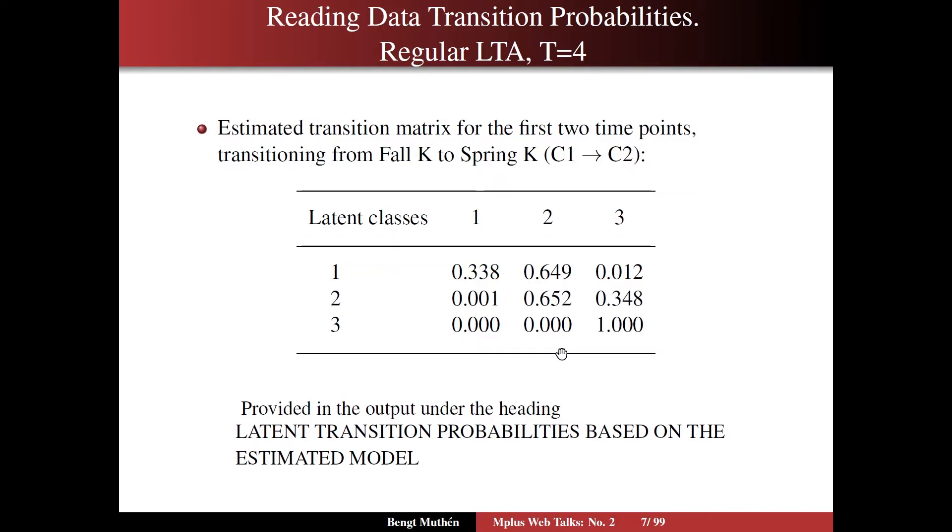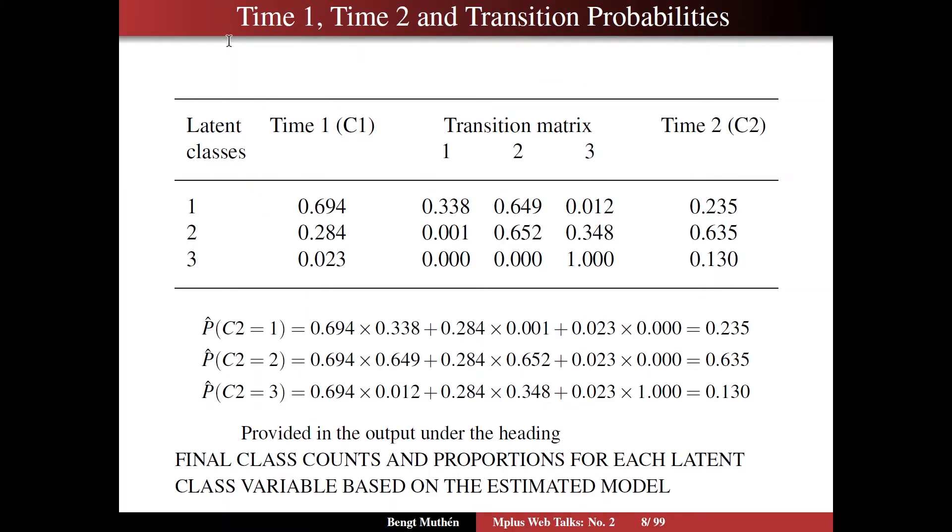This transition table, transition matrix, is provided under the heading latent transition probabilities based on the estimated model. Here we put together the time one probabilities, time two probabilities, and the transition probabilities. The rows are the latent classes, and here we have the probabilities at time one for the latent classes. We have a fairly high probability of being in the lowest class in the fall of kindergarten, and a sizable probability also for being in class two, but a very small probability of being in class three already in the fall of kindergarten. Then we have the transition matrix, those probabilities that we just looked at here in the middle. From those two quantities we can then compute the time two probabilities for the three classes. That is, the probabilities for the classes in the spring of kindergarten.